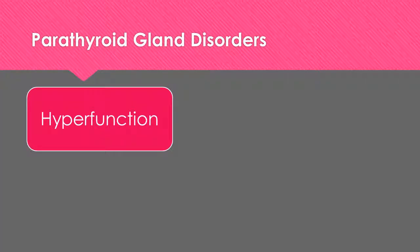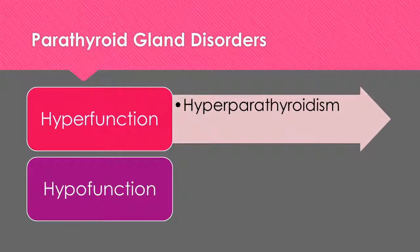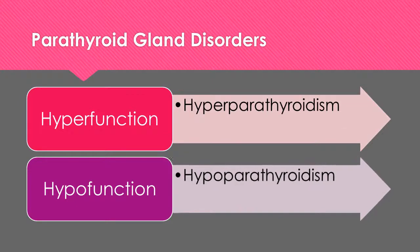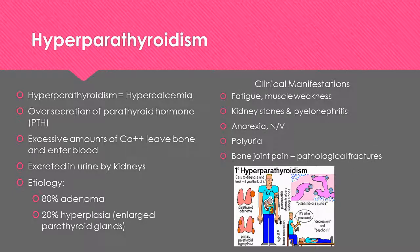Parathyroid disorders relate to either hyperfunction, called hyperparathyroidism, or hypofunction, called hypoparathyroidism. Hyperparathyroidism equals hypercalcemia. This is an over-secretion of parathyroid hormone, causing excessive calcium to leave the bone and enter the blood, where it is excreted in the urine. About 80% of cases are due to adenomas and 20% due to hyperplasia. Clinical manifestations include fatigue, muscle weakness, kidney stones, pyelonephritis, anorexia, nausea and vomiting, polyuria, and bone and joint pain.